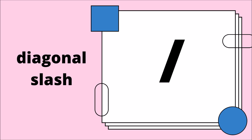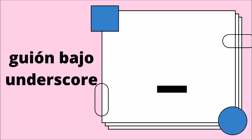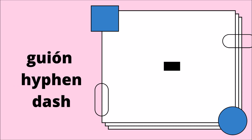Diagonal means slash. Diagonal. Guión bajo means underscore. Guión bajo. Guión means hyphen or dash. Guión.